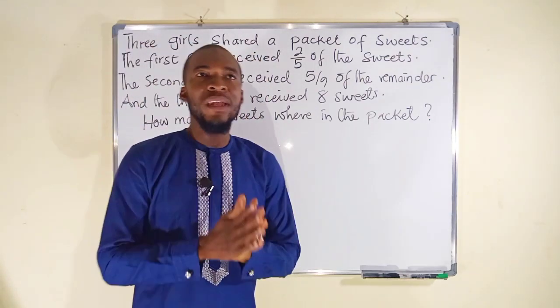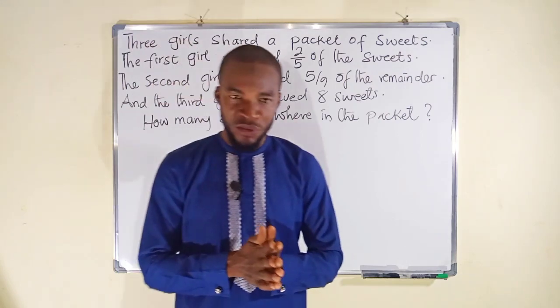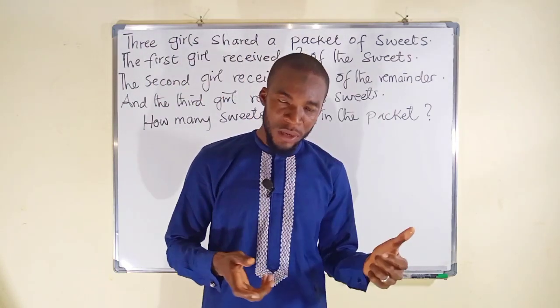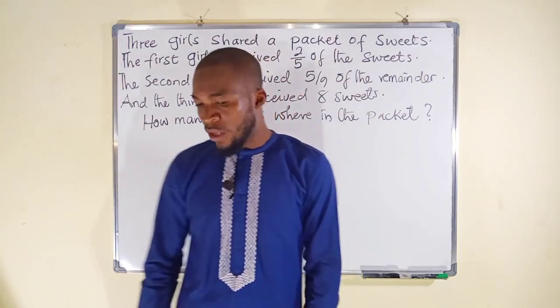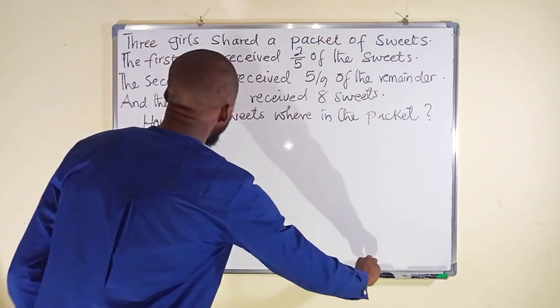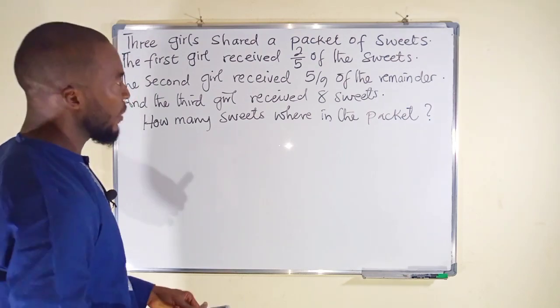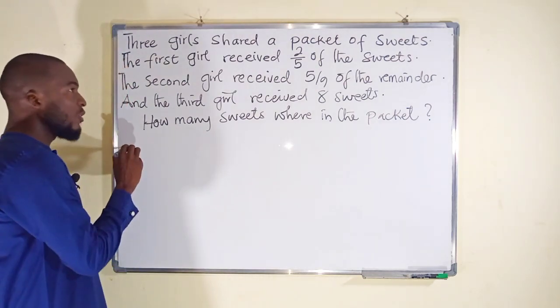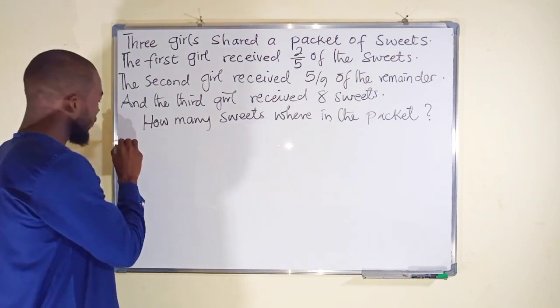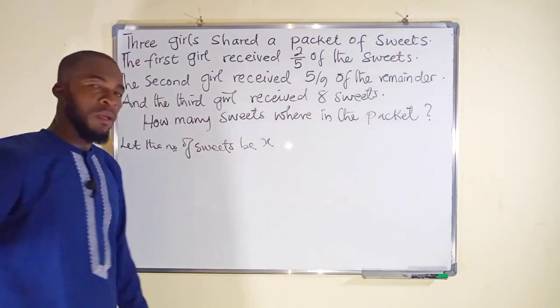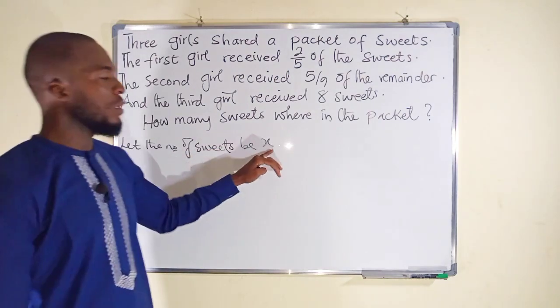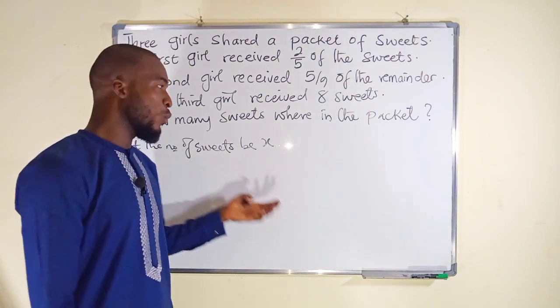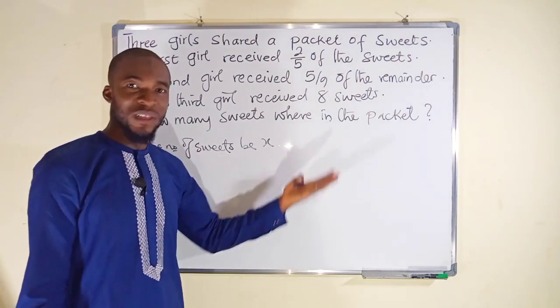It is always recommended when dealing with word problem questions that every value which is not given and is unknown, you should declare it with a variable. Since we don't know the number of sweets in this packet, we can declare that with a variable x. So let the number of sweets in that packet be x. Whatever the value of x is will determine the number of sweets in that packet.